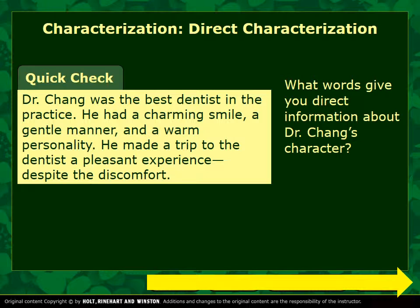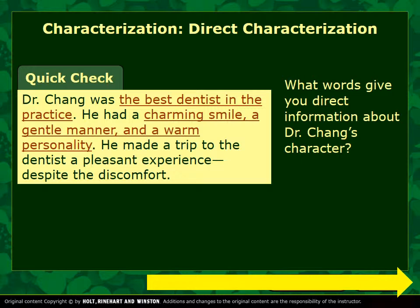Let's try it again. Which words in this passage give you direct information about Dr. Chang's character? Dr. Chang was the best dentist in the practice. He had a charming smile, a gentle manner, and a warm personality. He made a trip to the dentist a pleasant experience despite the discomfort. Is this a guy you'd like to go to? The highlighted words here are all examples of direct characterization which tell us about Dr. Chang's character.